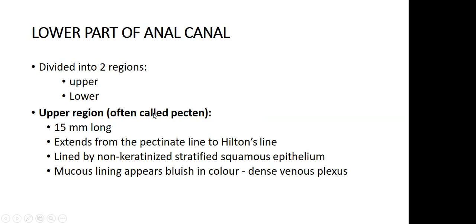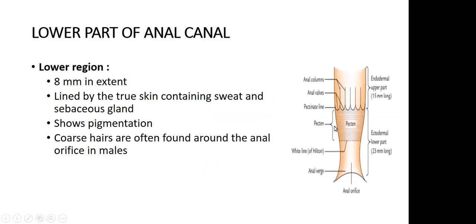The lower part of the anal canal is divided into two regions. The upper region, called the pecten, extends from the pectinate line to Hilton's white line, around 15 mm in length, and is lined by non-keratinized stratified squamous epithelium. The mucous lining appears bluish due to dense venous plexuses. The lower region is around 8 mm in length, lined by true skin containing sweat glands and sebaceous glands, extending from Hilton's white line to the anal orifice, with pigmentation and coarse hair.